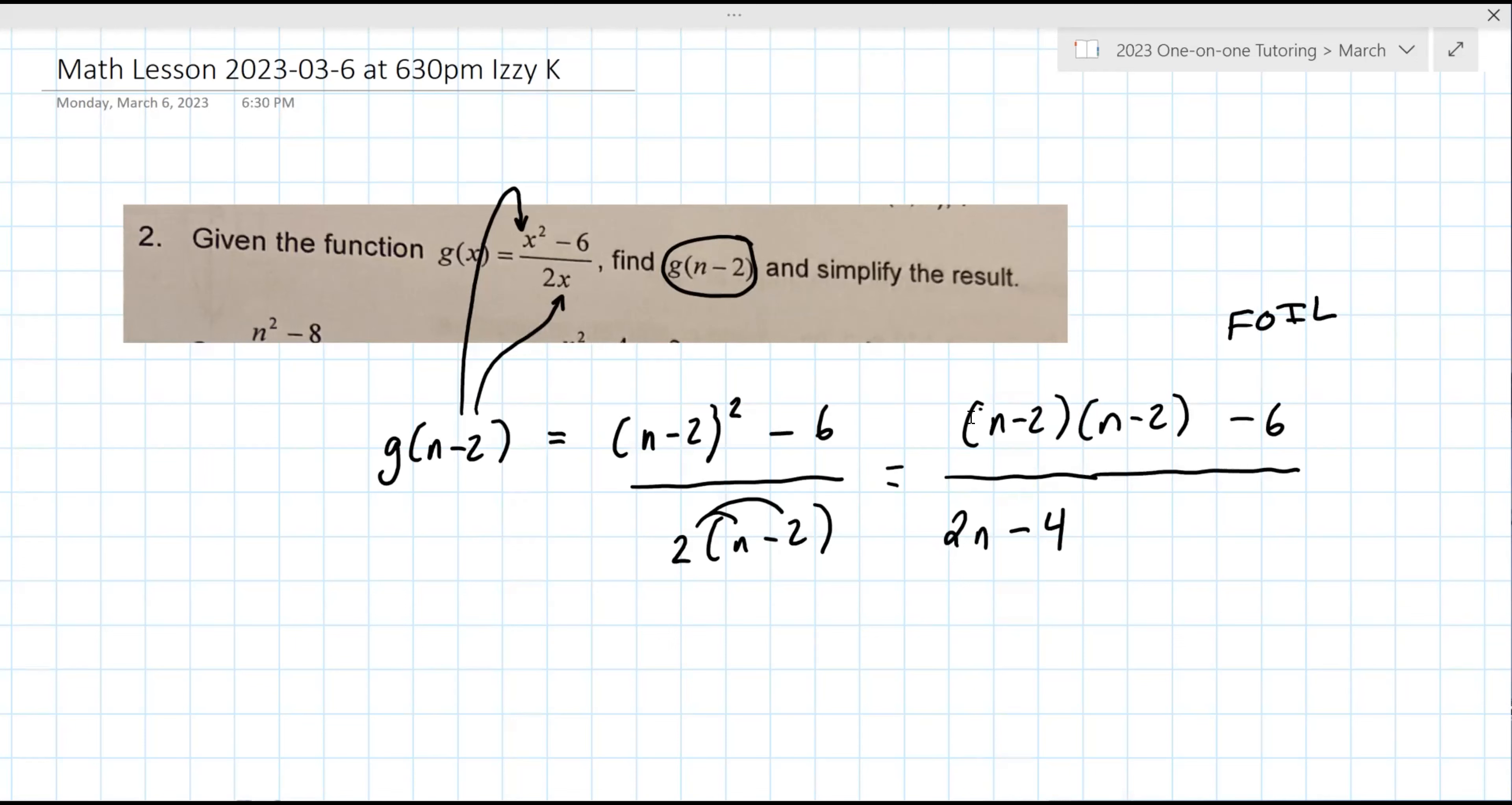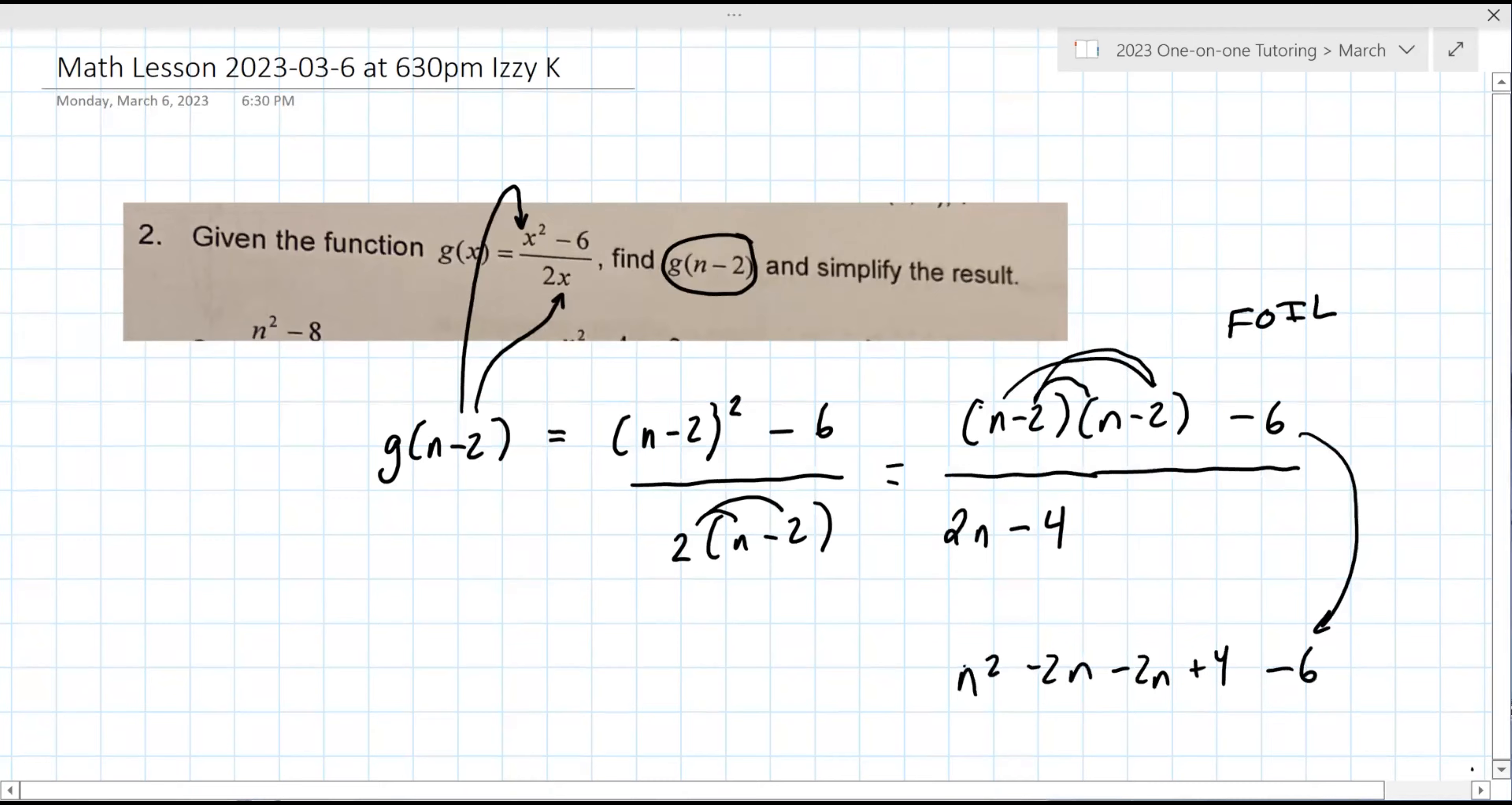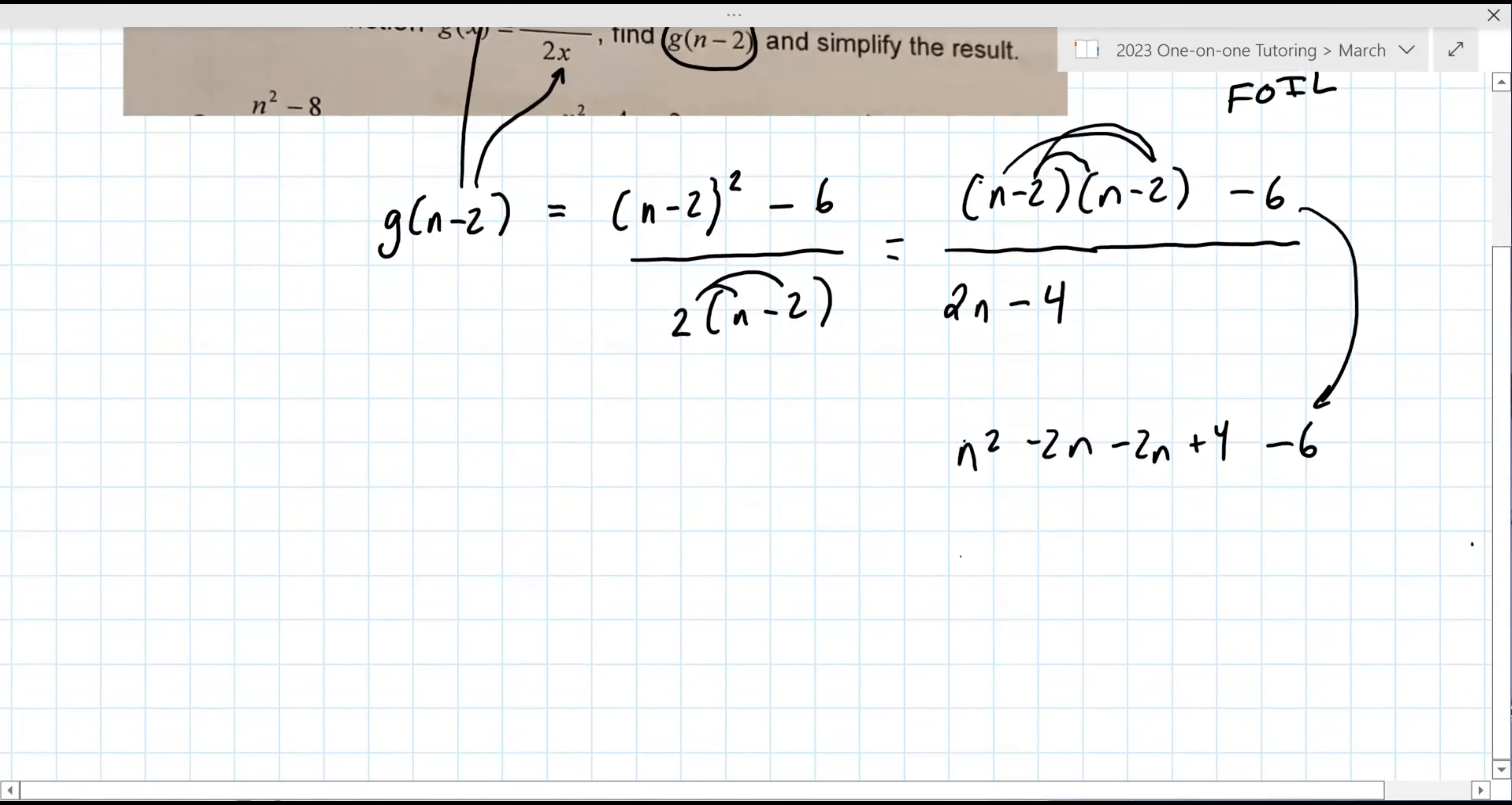Yeah. Okay, so it's n times n, that's n squared, n times minus two, minus two n, minus two times n, minus two n again, and minus two times minus two is positive four. And then don't forget to bring down that minus six. Okay. So you combine like terms: minus two n minus two n is minus four n, positive four minus six is minus two. That's your numerator, and that's probably enough now to determine that it is letter c.